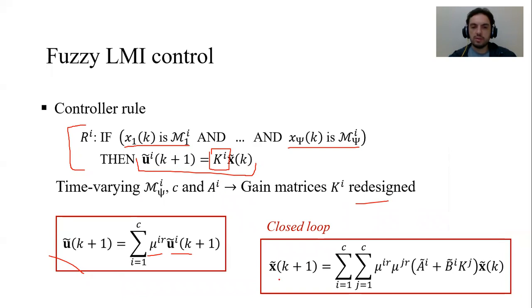The output of the fuzzy controller is a fuzzy combination of the local control signals. And when we put the model and the controller in the same loop, the evolution of the states is given by this equation, which depends on the system matrix, the actuation matrices and the gain matrices. So the evolution of the system is in our hands by means of the gain matrix.